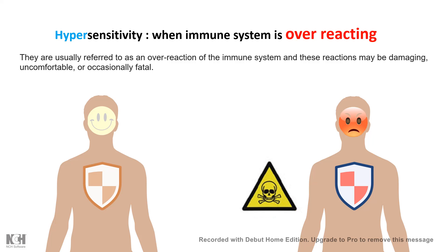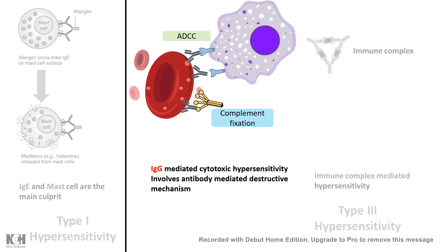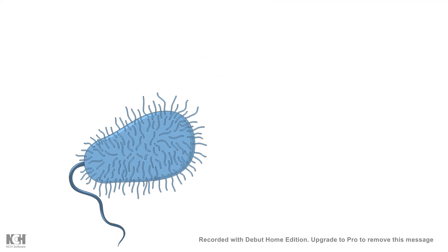Hypersensitivity could be of different types. Type 2 hypersensitivity is IgG-mediated, or more precisely antibody-mediated, and it involves complement fixation, degradation of cells, and antibody-dependent cytotoxicity. These are the key features of type 2 hypersensitivity.